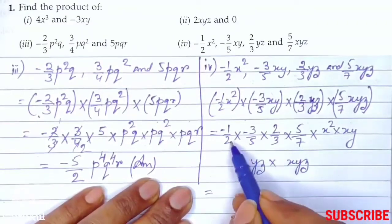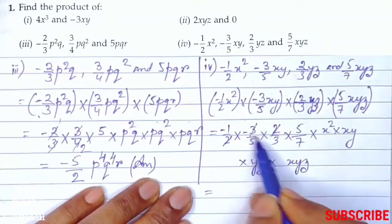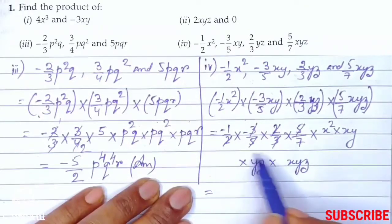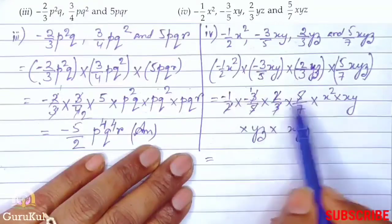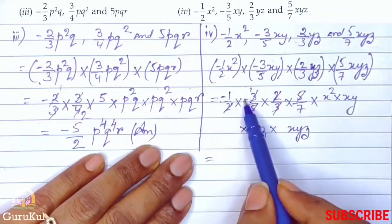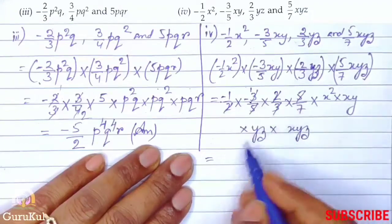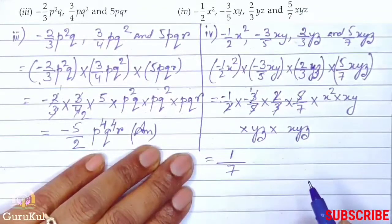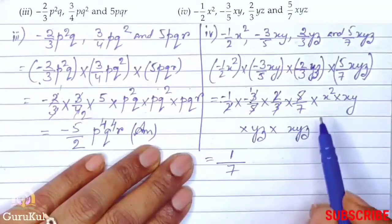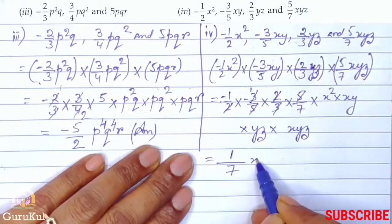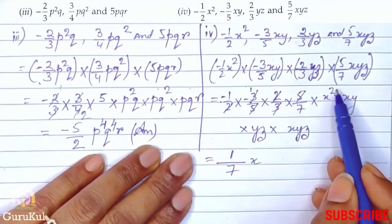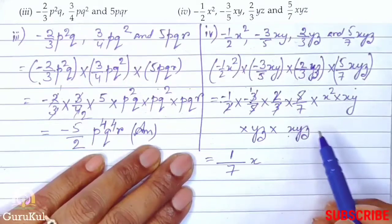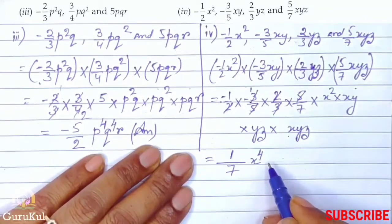Here 2 and 2 got cancelled, 3 and 3 cut, 5 and 5 cut. So what remains: in the numerator there are two negative signs, so minus into minus becomes positive. So numerator is 1 and denominator is 7. Now let us talk about the literals. First comes x: x to the power 2, x to the power 1, again x to the power 1, that gives us x to the power 4.